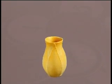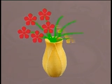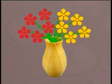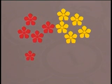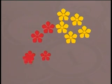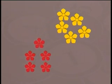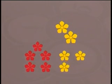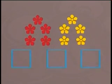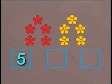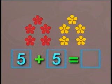In the vase, there are red flowers and yellow flowers. What is the sum of all the flowers? The sum means we have to add all the flowers together. Now, there are one, two, three, four, and five. Five red flowers. Five yellow flowers. If we write this in a number sentence, then we should get five plus five equals ten. Very good! Ten flowers.